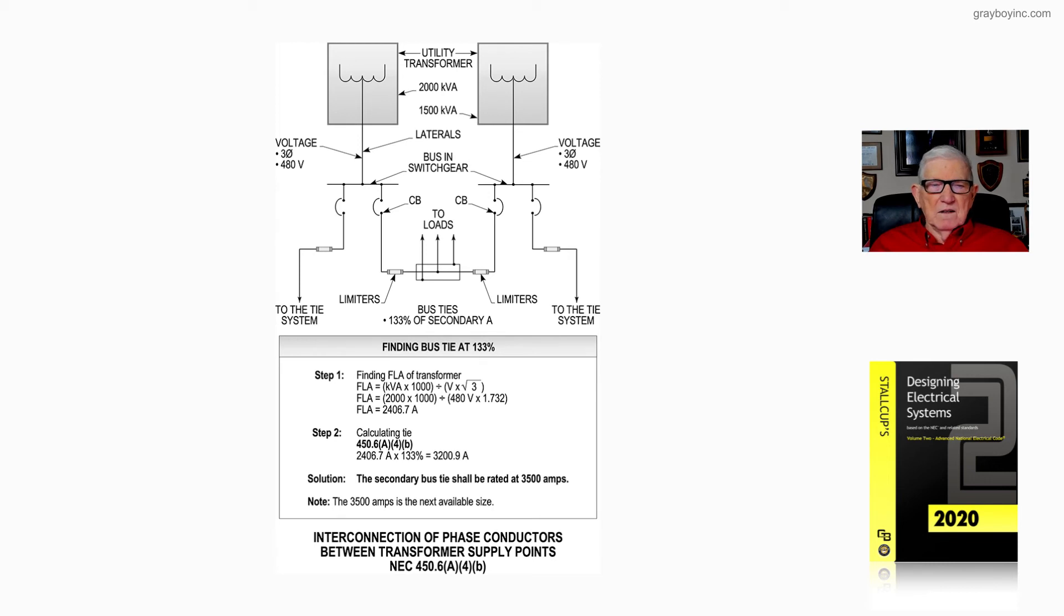And you can see the three taps of those loads coming off of there. Now, that's what this figure 20-17 is illustrating, is the interconnection of the phase conductors between the transformer supply points in accordance with the requirements of 450.6(A)(4)(b).